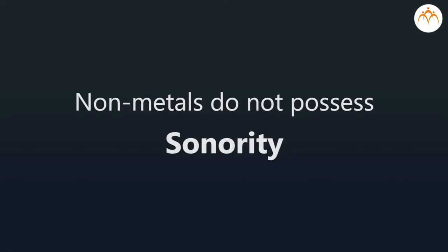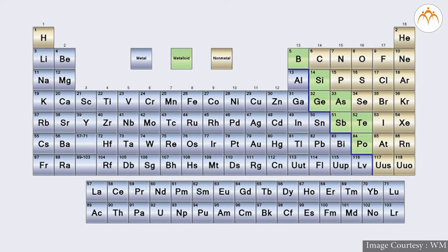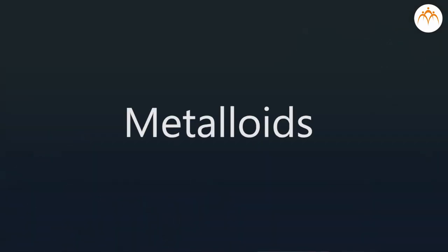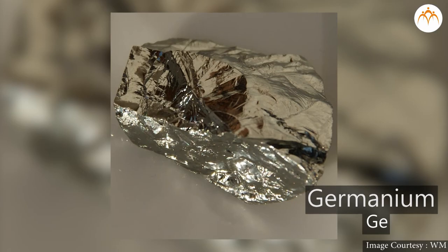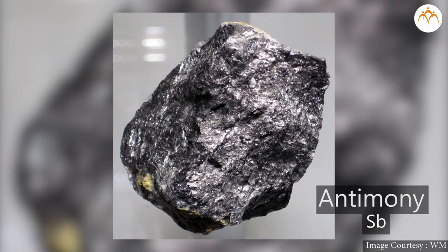Non-metals do not possess this property. Students, do you remember you had learned about some elements which are intermediate between metals and non-metals? Yes, they are called metalloids. Some examples are arsenic (As), silicon (Si), germanium (Ge), and antimony (Sb).